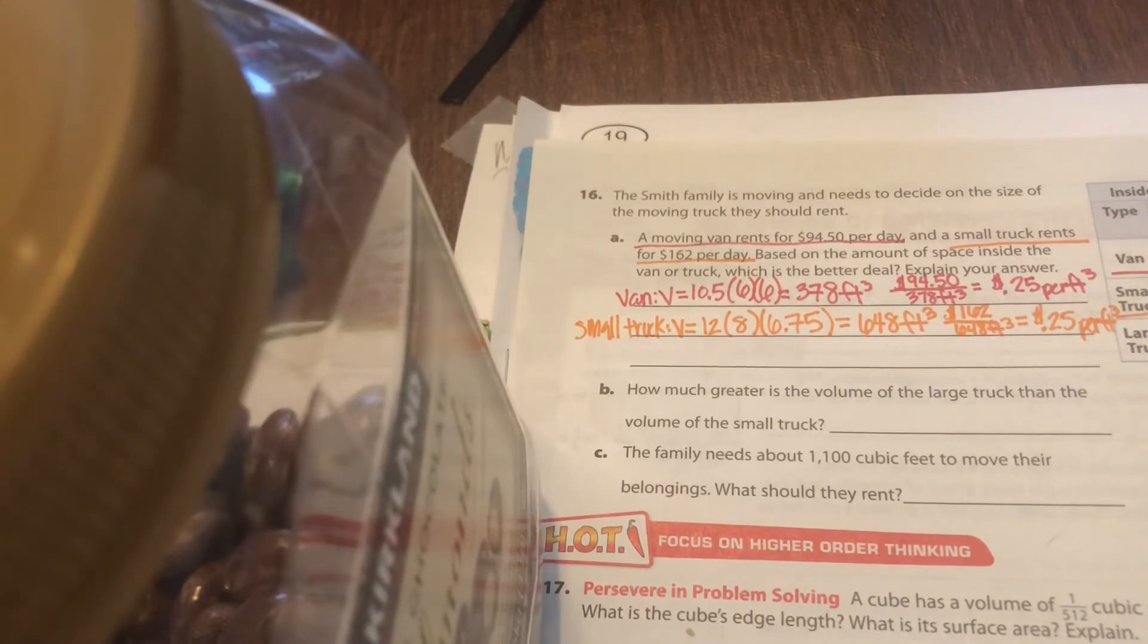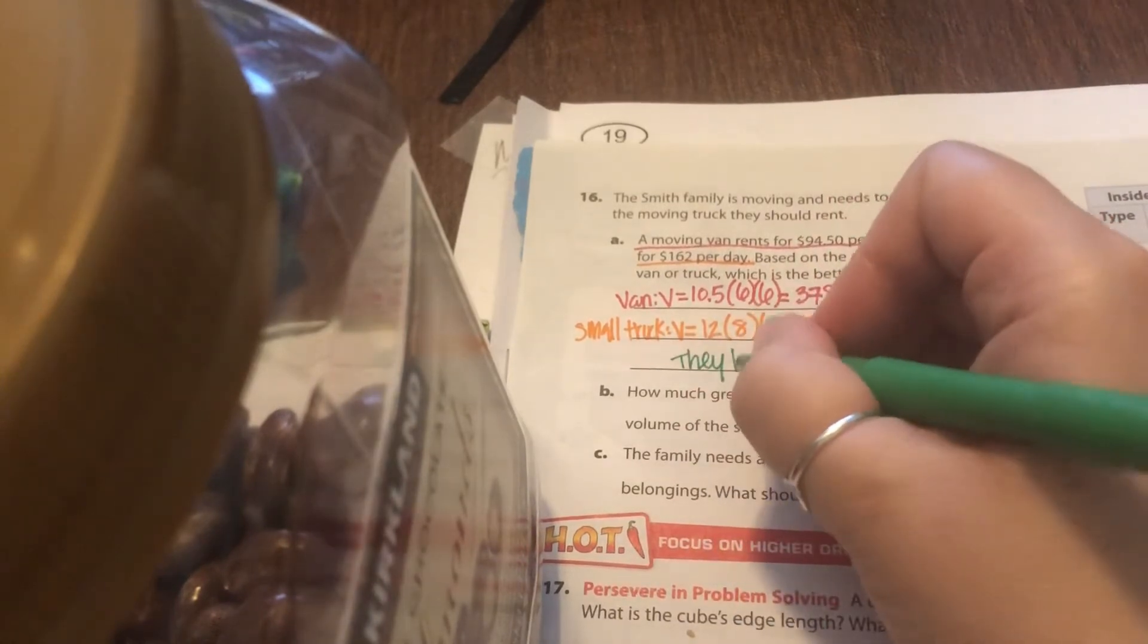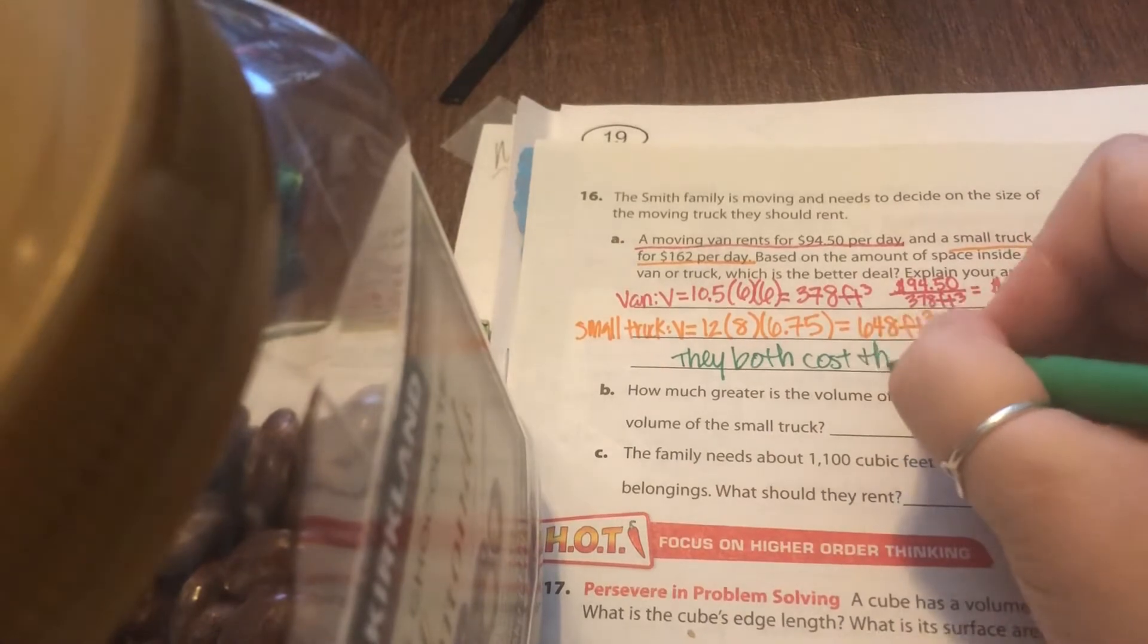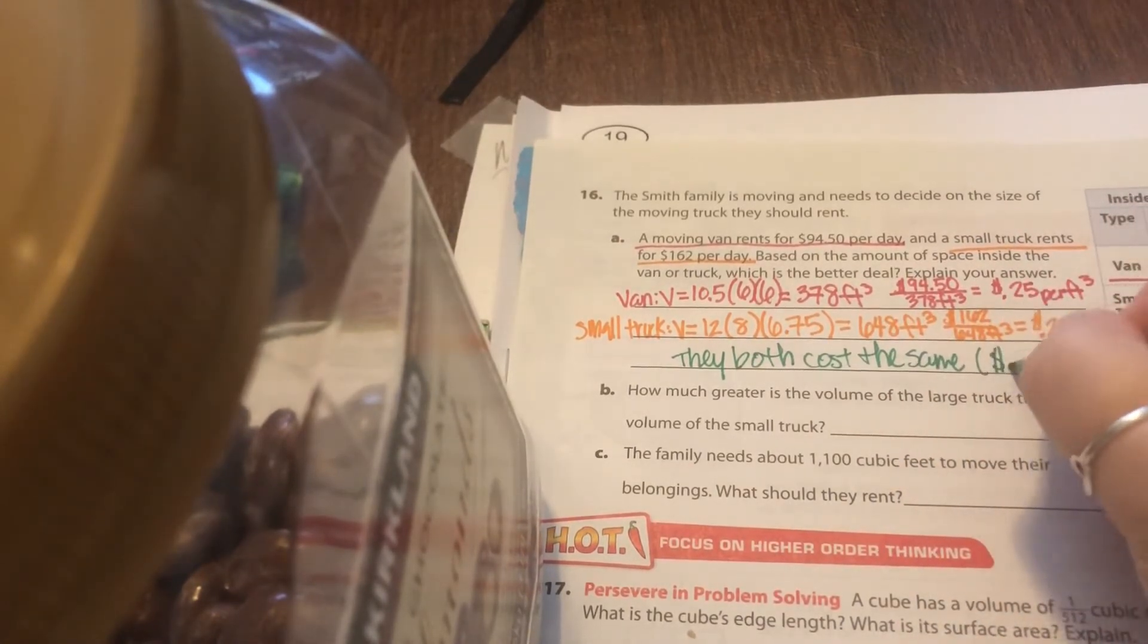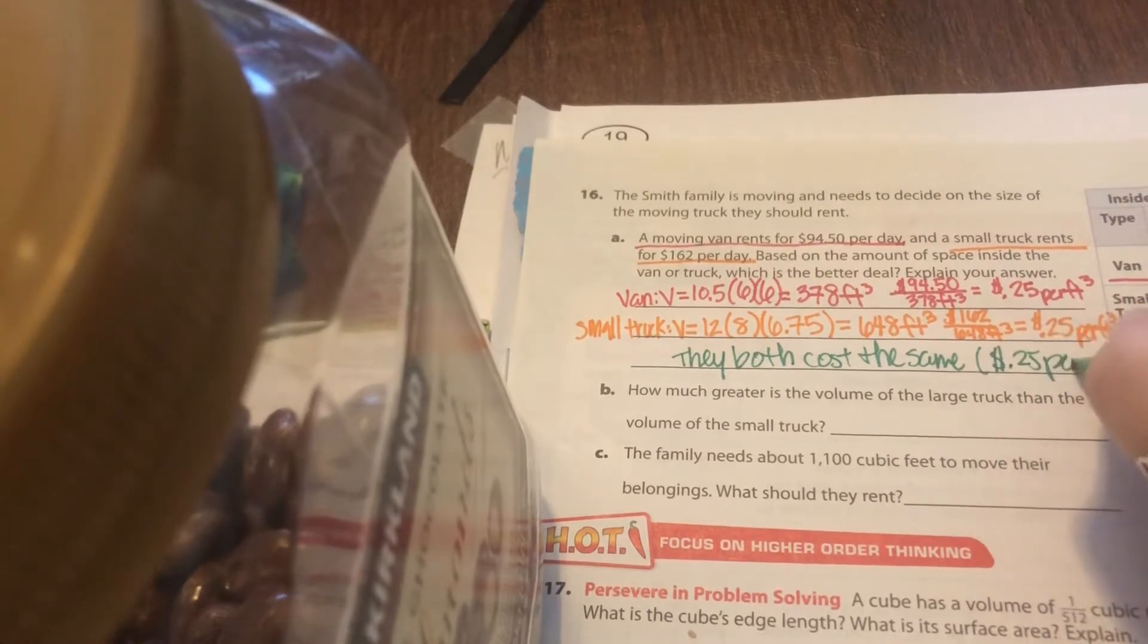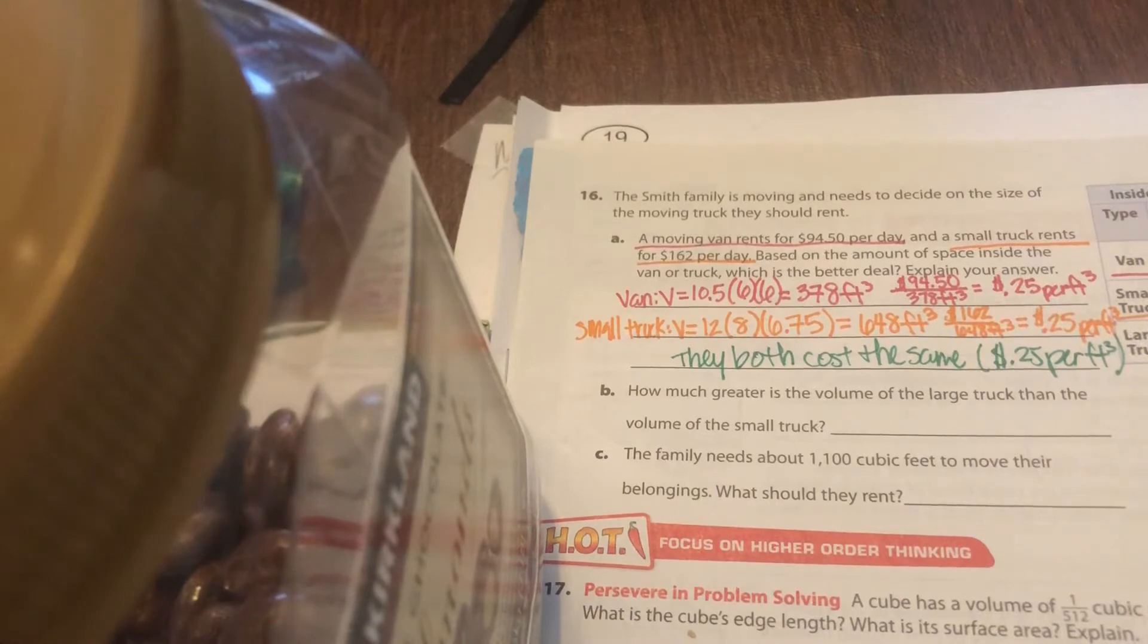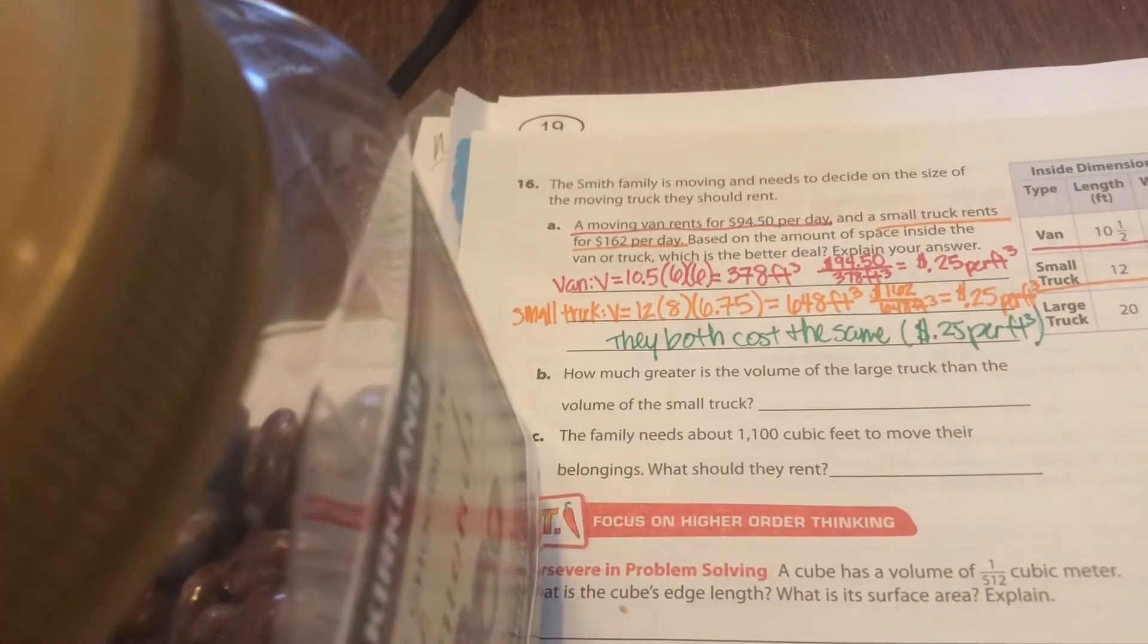Okay. So then if you answer this question, they're saying, okay, which one's the better deal? So you can say they both cost the same of 25 cents per cubic foot. And then it would be up to the person of which one they think they should use based upon the amount of things that they have.